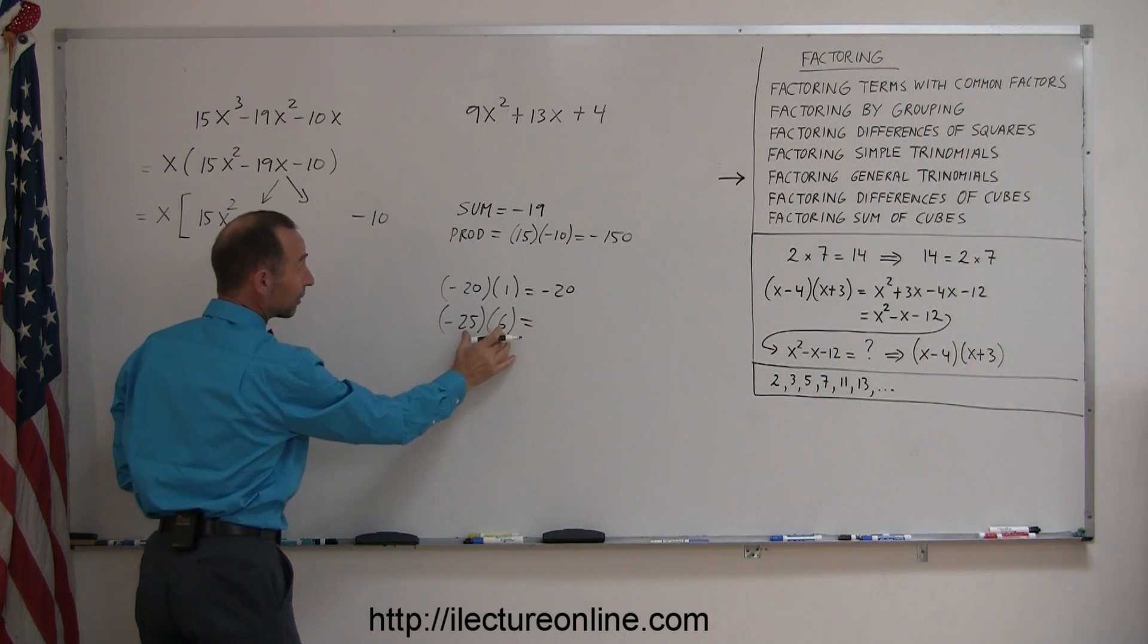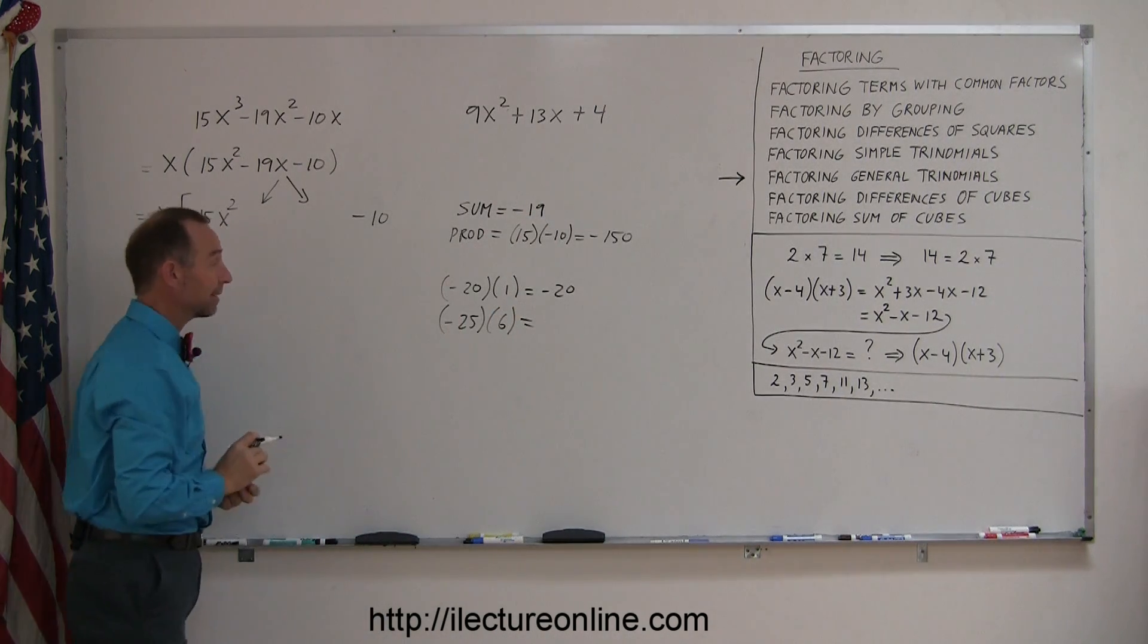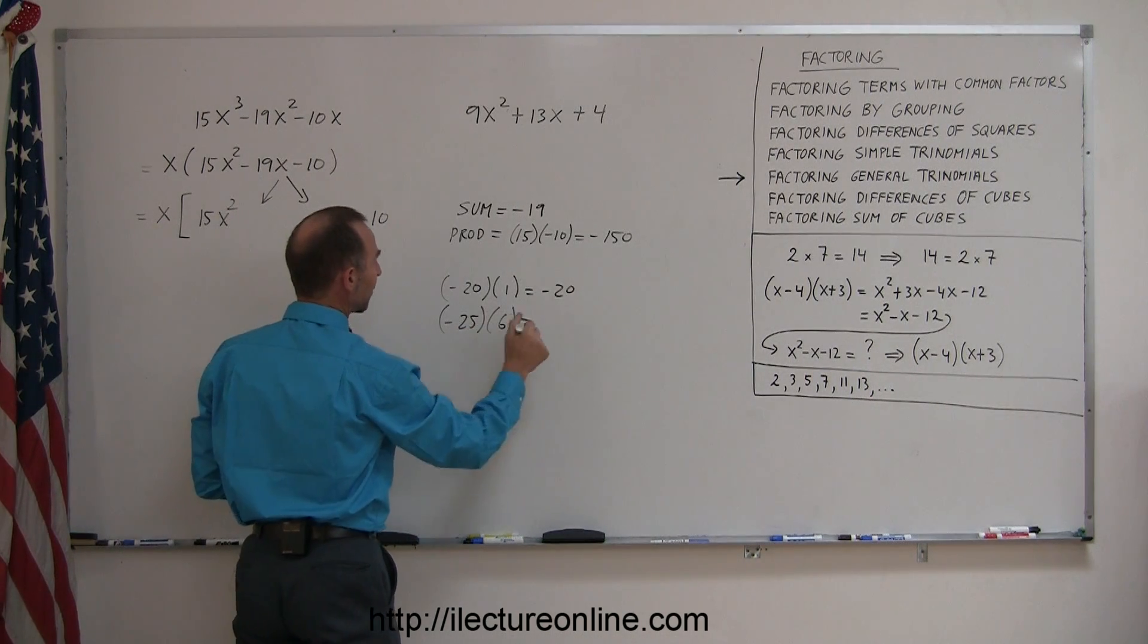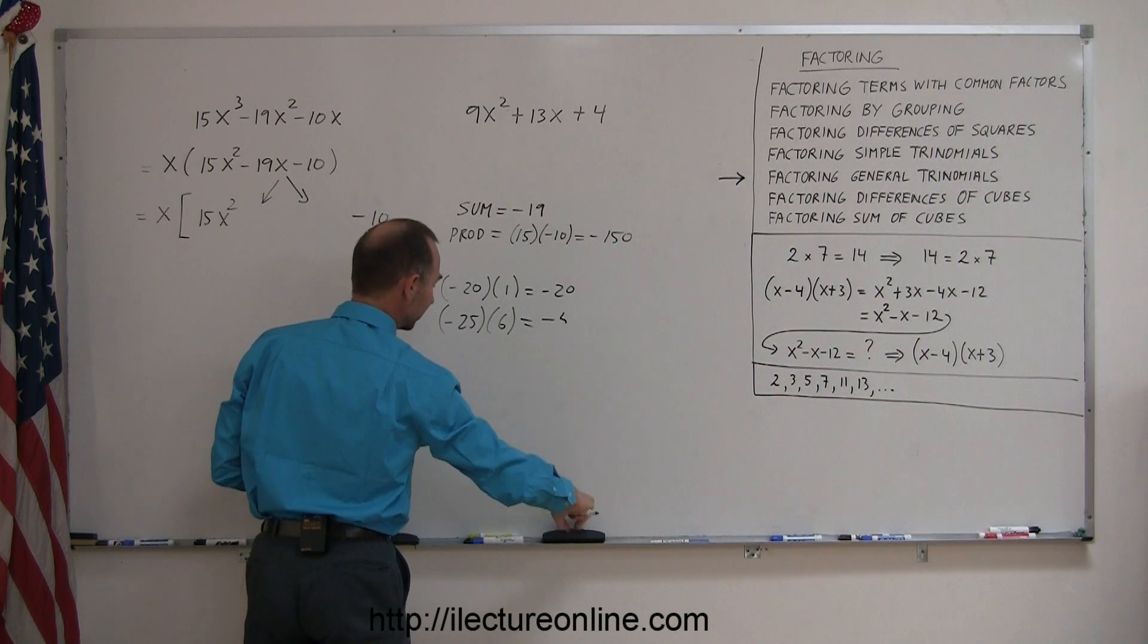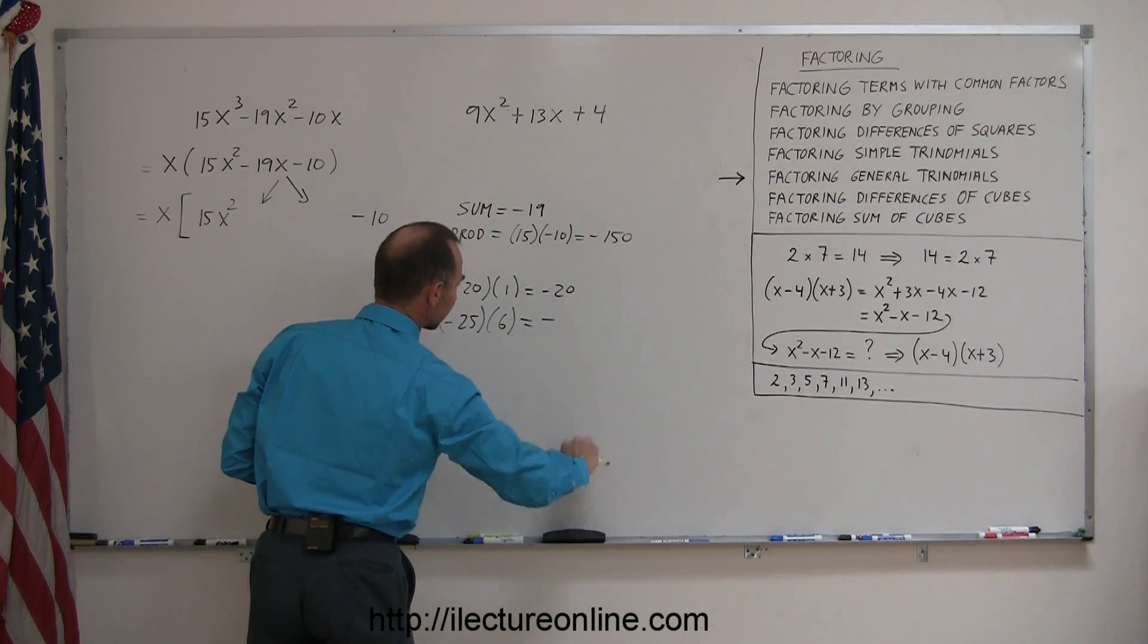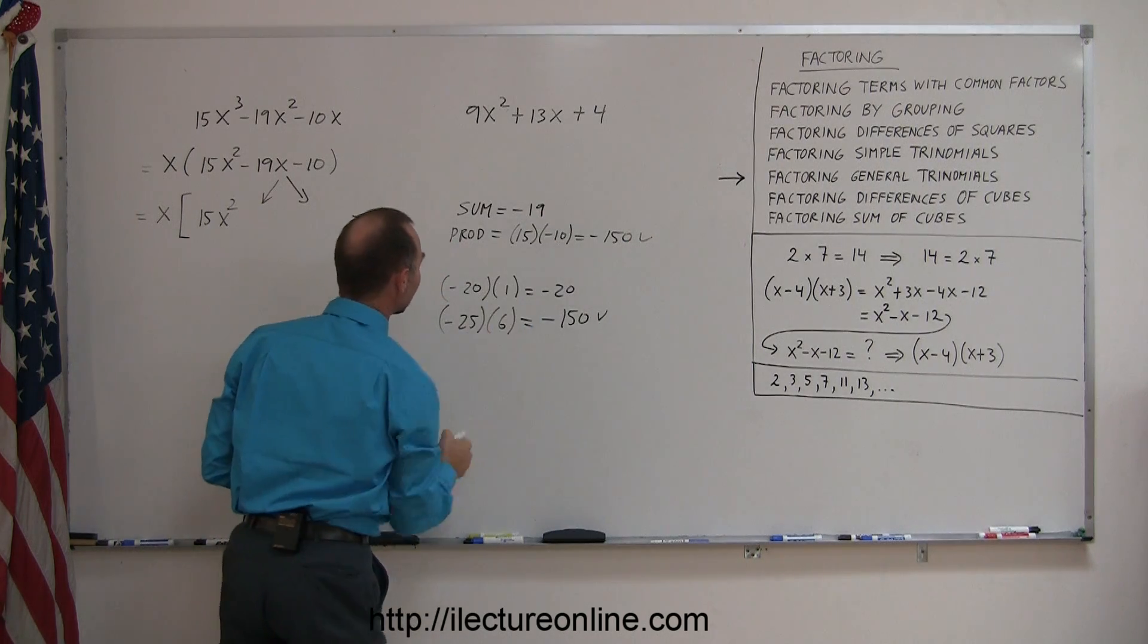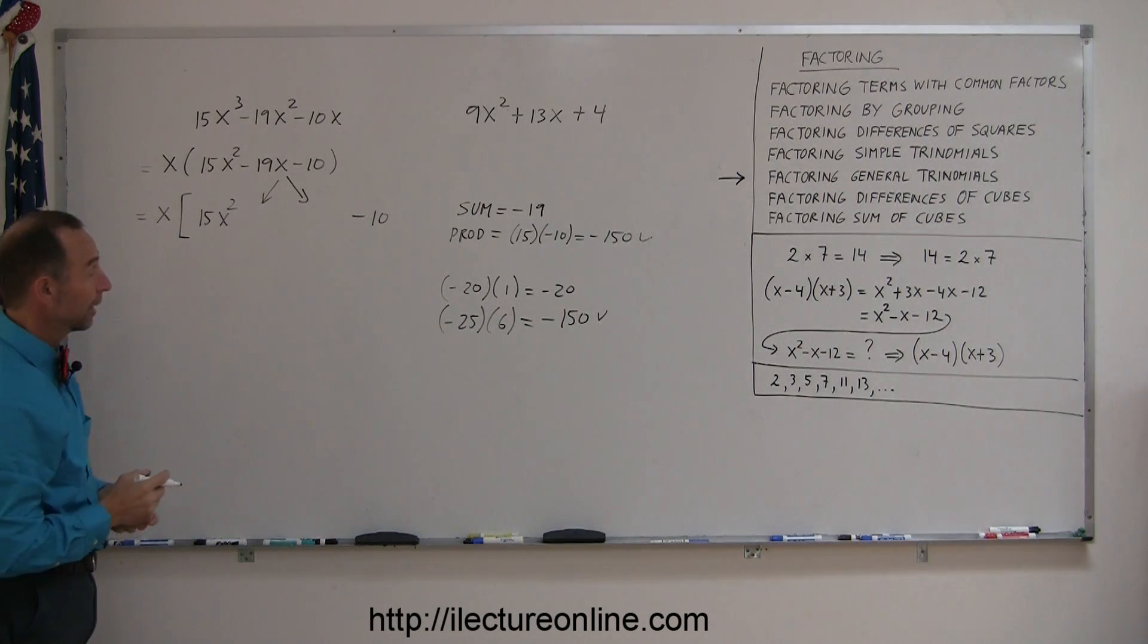How about minus 25 and a positive 6? Right, again when I add them together I get a negative 19, and 6 times 25 is minus 150. Oh, there we go, I got it right off the bat, minus 150. So the two numbers I was looking for is minus 25 and a positive 6.